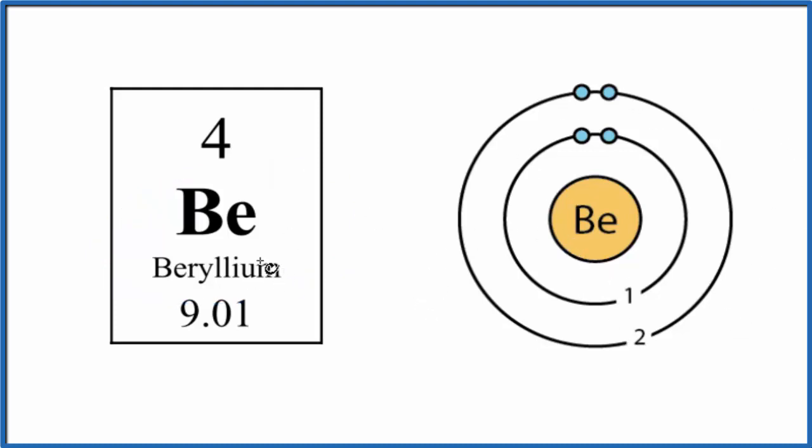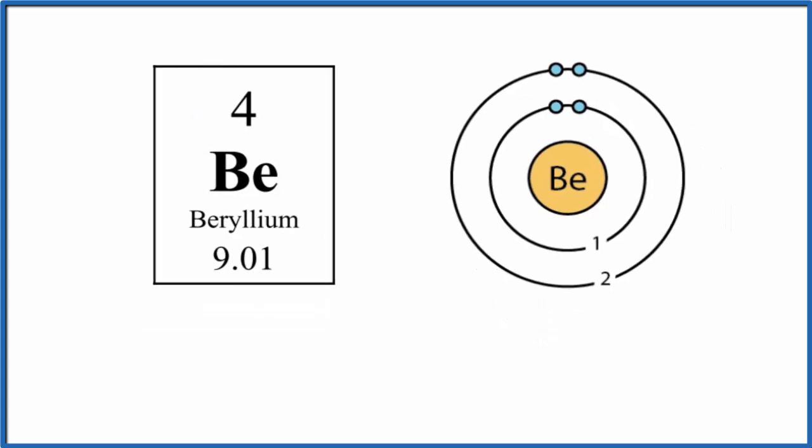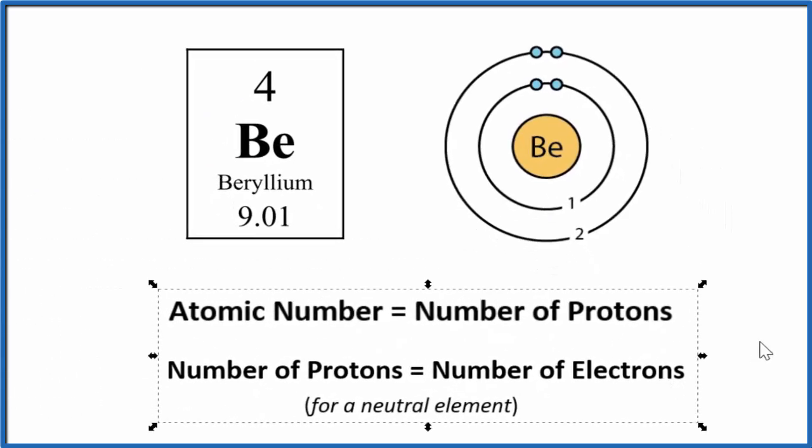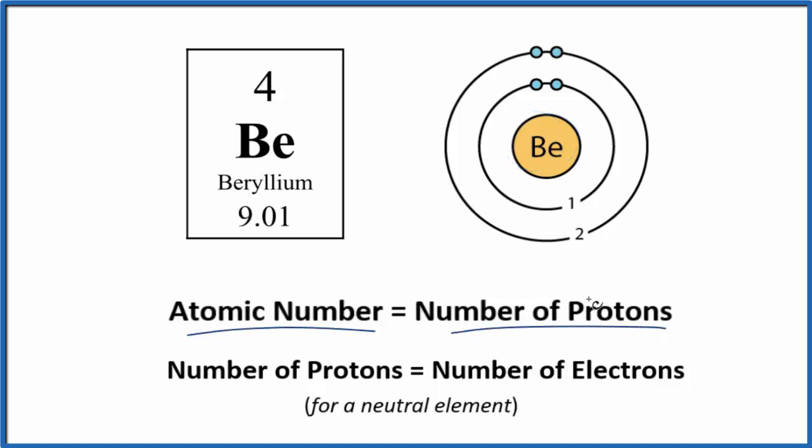To start out, when we look at beryllium on the periodic table, its atomic number is four. The atomic number is the number of protons in the nucleus. Here's our nucleus for beryllium.